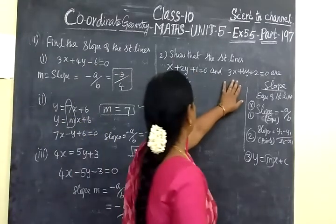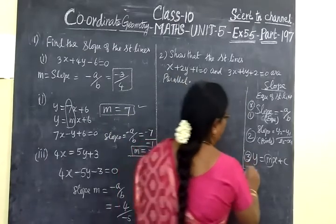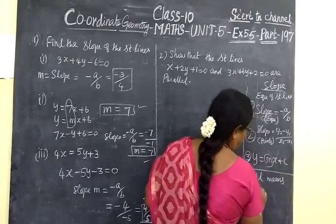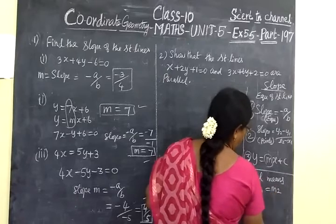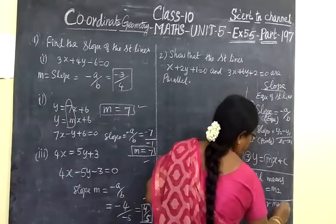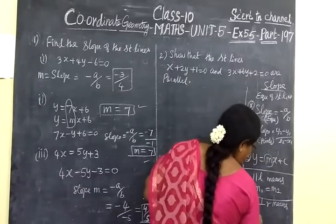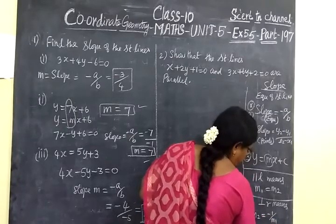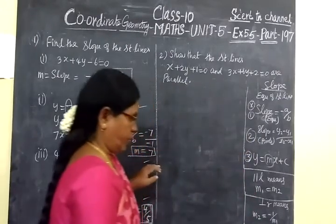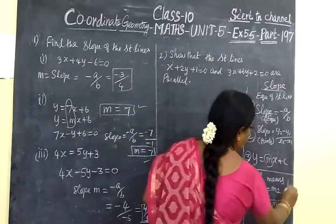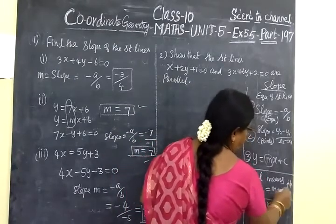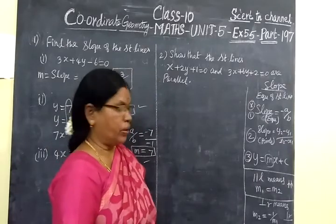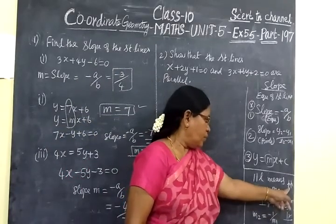Next, parallel. Parallel means slope: M1 equals M2. Perpendicular means M1 times M2 equals minus 1. So this is your condition for perpendicular. If two lines are perpendicular, M2 equals minus 1 by M1. If two lines are parallel, slopes are equal. If M1 M2 equals minus 1, then two lines are perpendicular. M1 equals M2, then two lines are parallel.